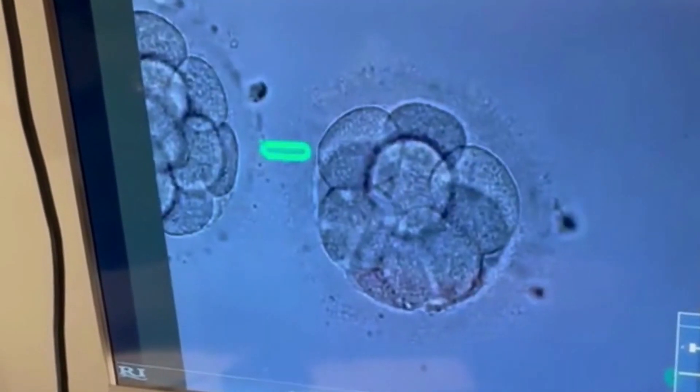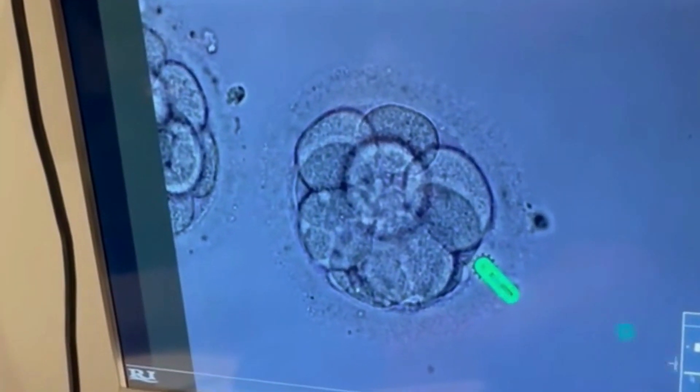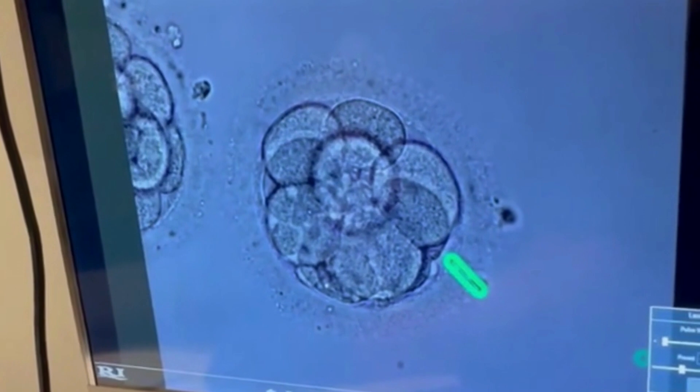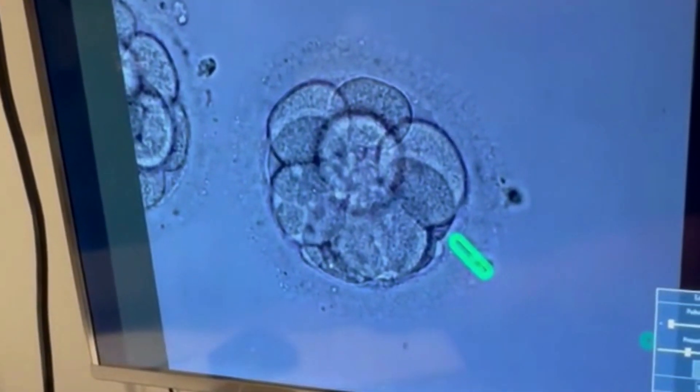The laser is shown as the green line on the screen and we select the best place to hatch so that the embryo is not harmed. Afterwards, the embryos will return to the incubator.